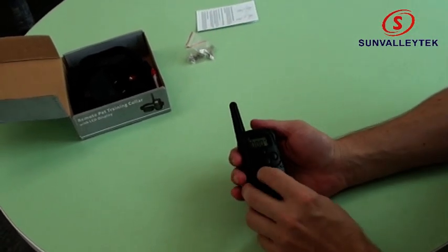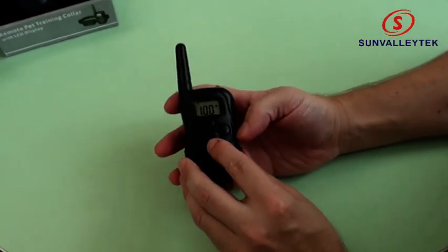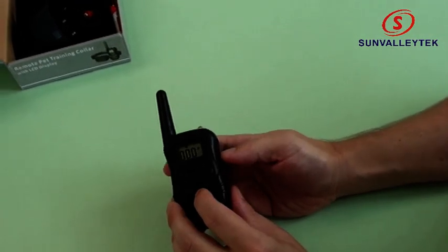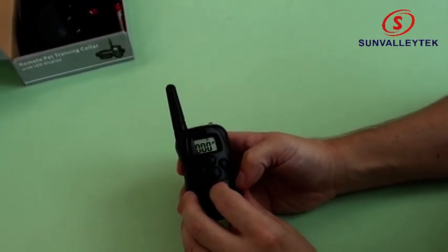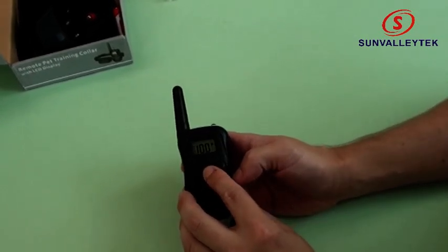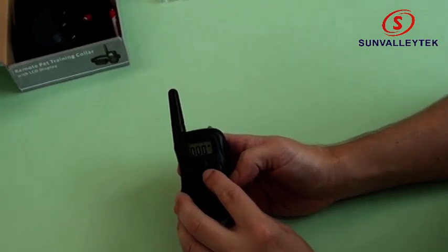The display has numbers which show us the level of shock or the level of vibration. In addition, we have two other modes which are sound and light. So, four modes in total: shock, vibrate, sound, light.